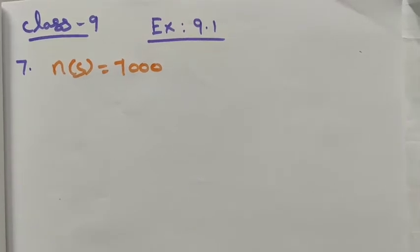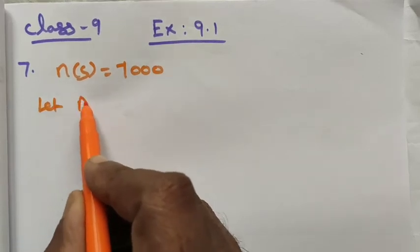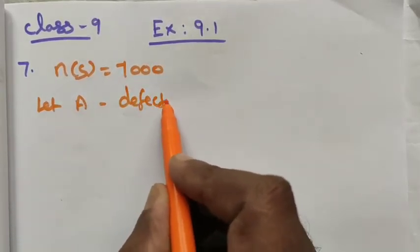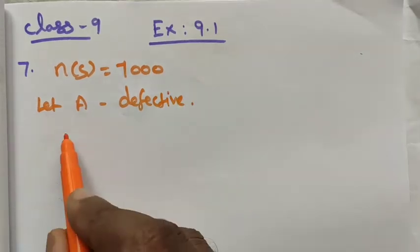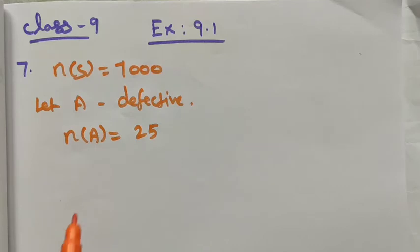The defective is 25. Let me take it as A, the defective items. Let A be the defective items, then number of defective items is n(A) equals 25. Now we want to find the probability of defective one.